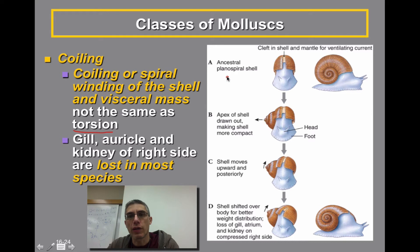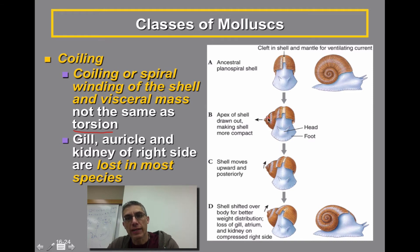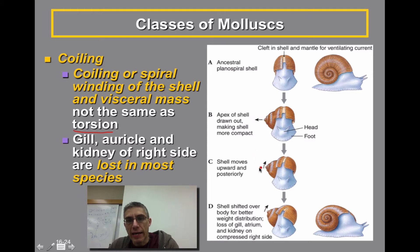Over here on the right you can see an example of an ancestral type of gastropod. Early in evolutionary history, the spiral nature of the shell actually occurred in a single plane. As that spiraling continues, the apex of the animal is drawn out either to the right or the left, which makes the animal sort of off balance. To compensate for that, the shell actually began moving upward and more posterior in the positioning of that animal.